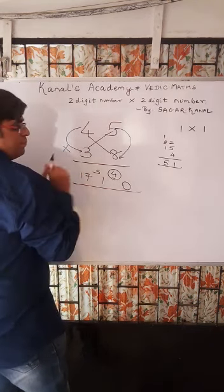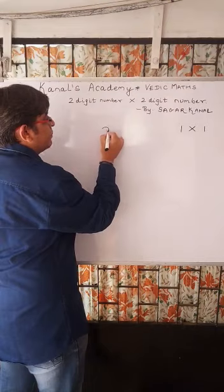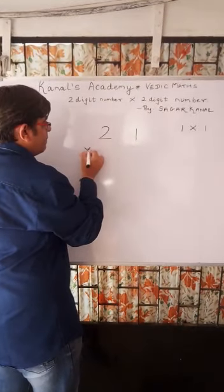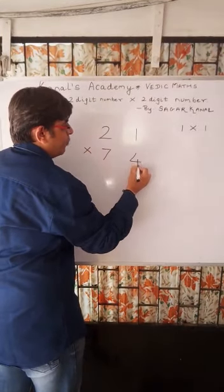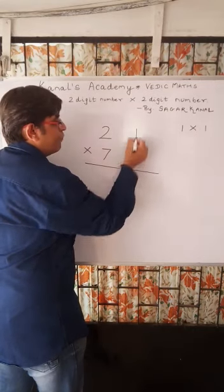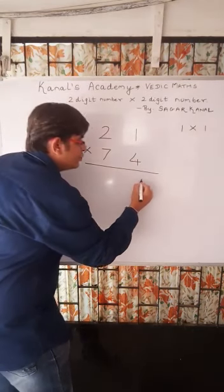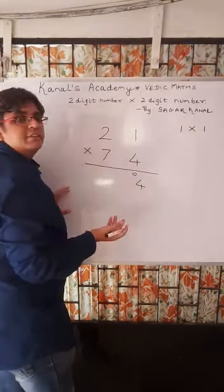One more example we will be taking so that it is very, very clear. Now, suppose you encounter a single digit while multiplying. Let's take an example. 21 multiplied by 74. So, 4 times 1 is 4. So, you simply write 4 here and 0 gets carried.